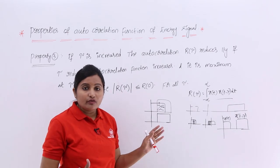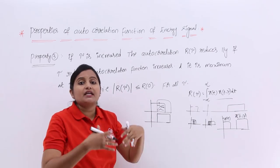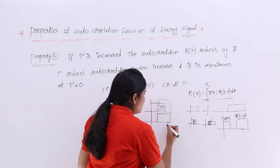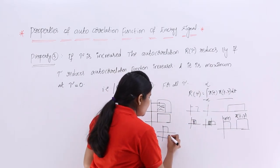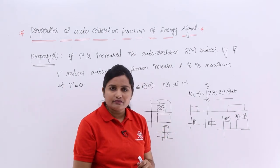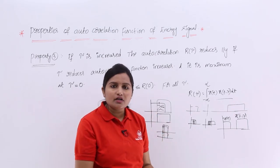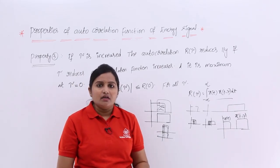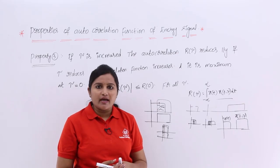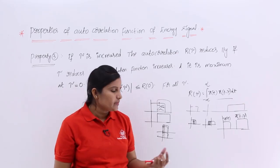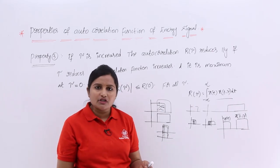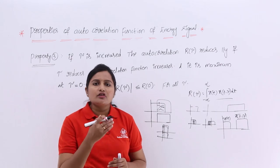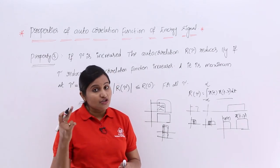If tau is low, the measure of similarity increases, meaning the autocorrelation function increases. For example, if tau is equal to 0, you are comparing the signal with itself, so there is 100% similarity. That is why the autocorrelation function reaches its maximum value at tau equal to 0.